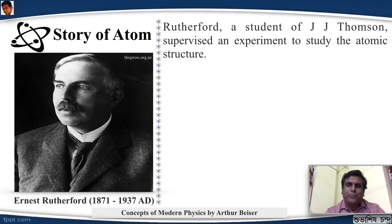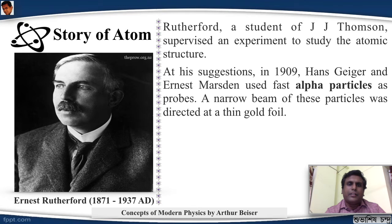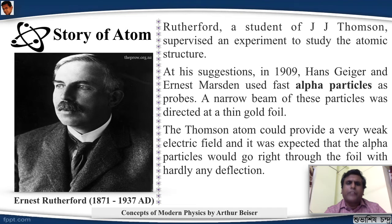At his suggestions, in 1909, Hans Geiger and Ernest Marsden used fast alpha particles as probes. A narrow beam of these particles was directed at a thin gold foil - I am arriving at the famous gold foil experiment. Now the Thompson atom, as it was known, could provide a very weak electric field, and it was expected that the alpha particles would go right through the foil with hardly any deflection. Let's see what they observed.